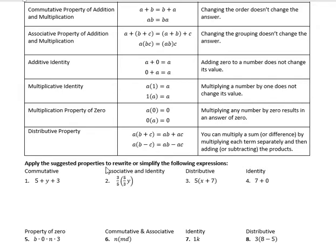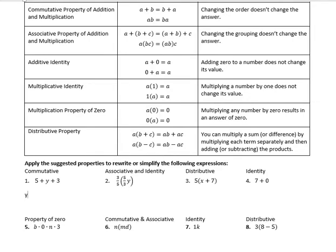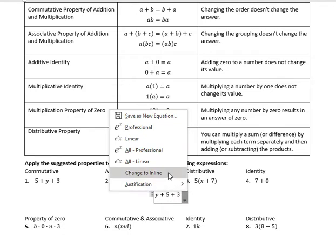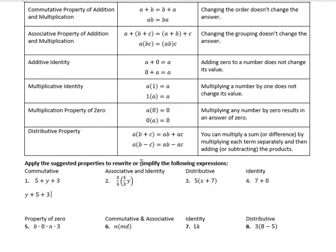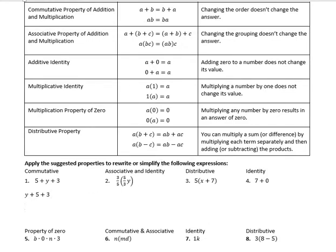It says apply the suggested properties to rewrite or simplify the following expressions. Commutative property: if I ask you to use the commutative property and it's all addition, we're talking about the commutative property of addition. I could rewrite that as y plus five plus three. Once I do that, I've reordered it. If you have five plus three, we could simplify that because we have the same terms there, both whole numbers. So we could say y plus eight. That's simplifying by first rewriting it and then combining those two terms.